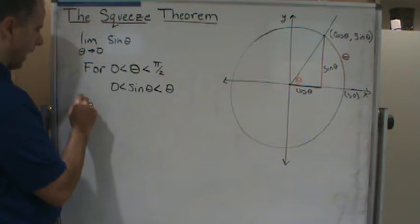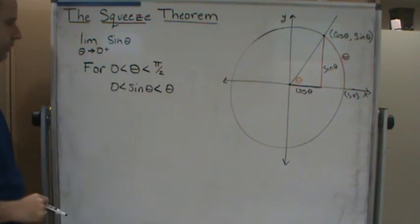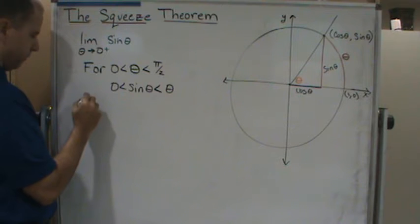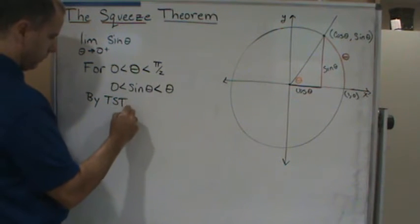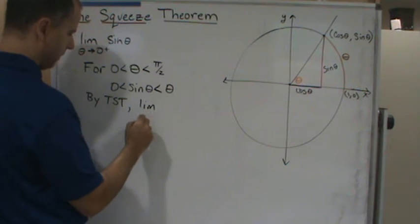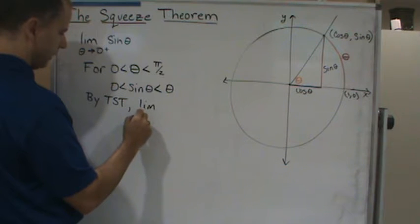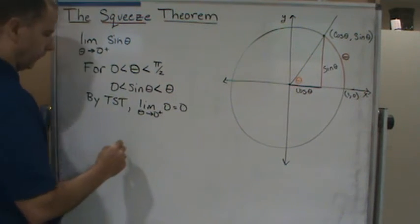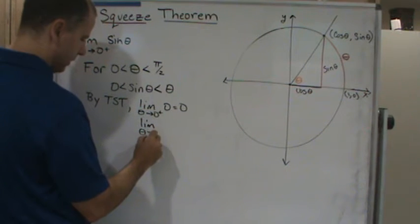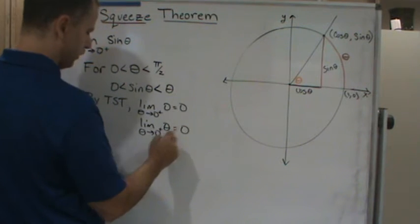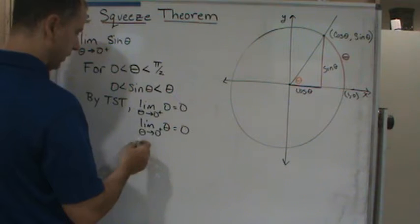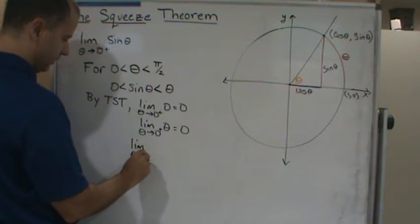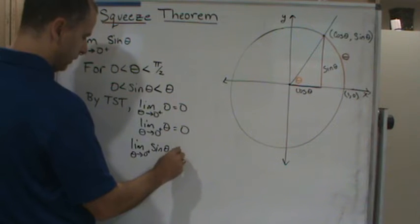Approaching zero from the right, we're in the first quadrant so this inequality holds. By the squeeze theorem: since the limit as theta approaches zero from the right of zero is zero, and the limit as theta approaches zero from the right of theta is also zero, we conclude that the limit as theta approaches zero from the right of sine theta must also equal zero.